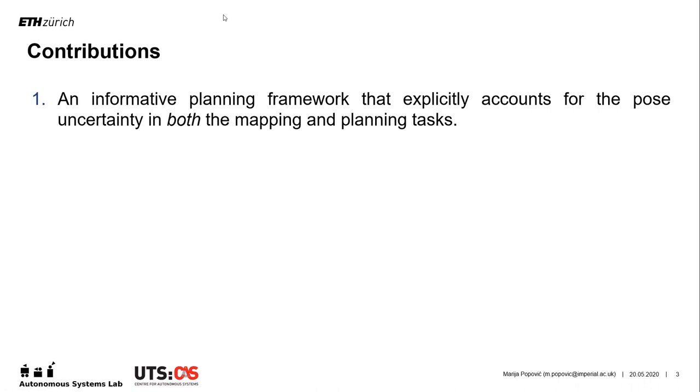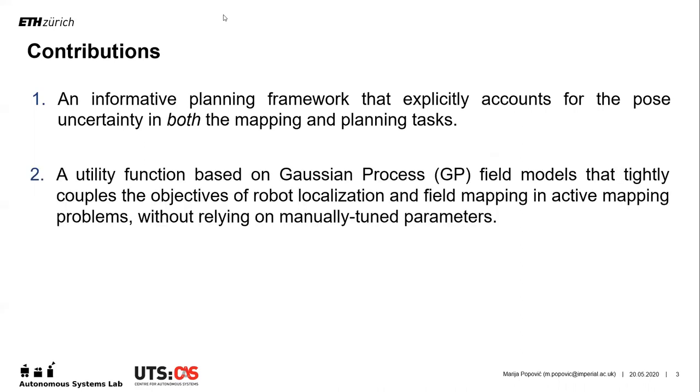For mapping, our strategy exploits a Gaussian process to capture the target environmental field given the uncertainty on its inputs. For planning, we propose a utility function that tightly couples the uncertainties in the robot pose and field map in GP-based mapping problems. Our formulation addresses the exploration-exploitation trade-off in a principled way without relying on manually-tuned parameters.